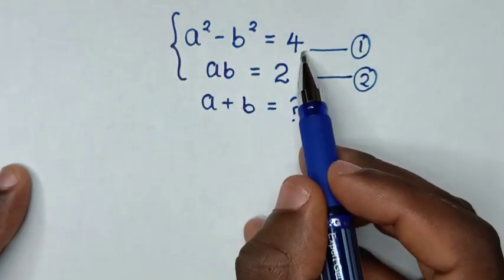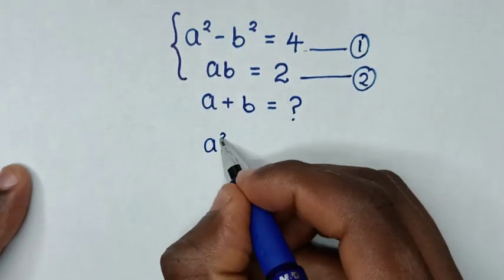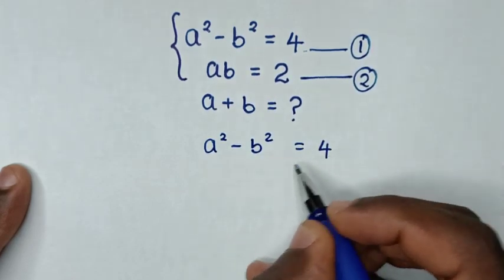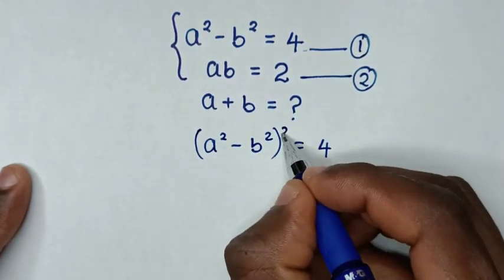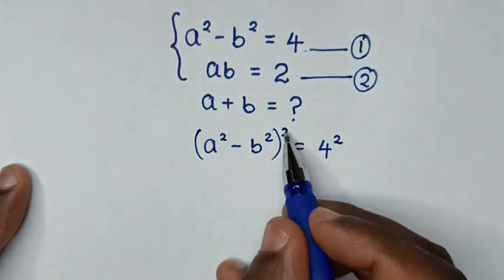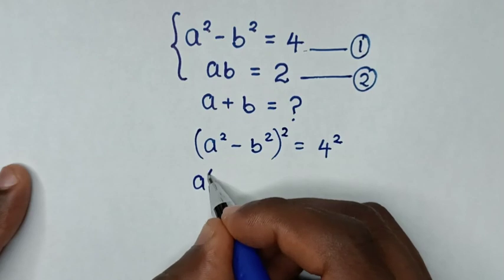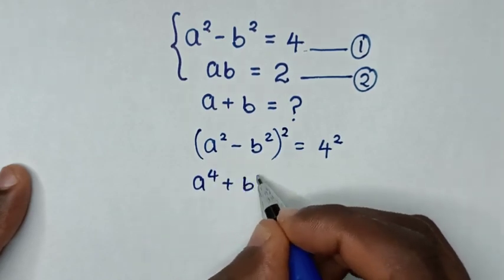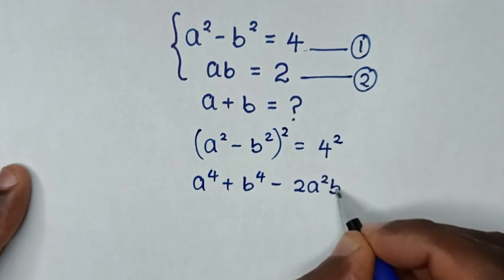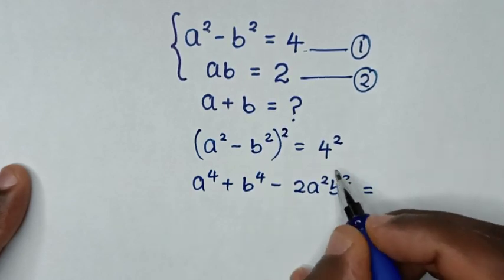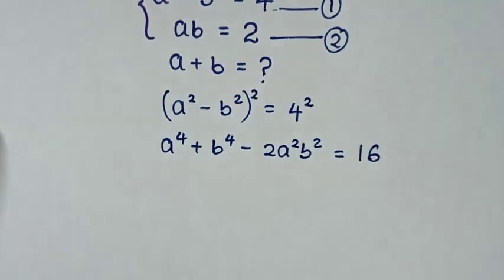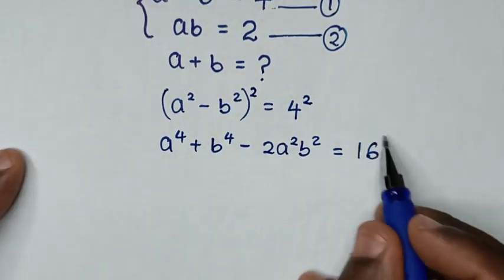Now from equation 1, which is a squared minus b squared is equal to 4, we square both sides. Then a squared minus b squared, bracket squared, is the same as a to the power 4 plus b to the power 4 minus 2a squared b squared, is equal to 4 squared, which is 16. Then in the next step we take the 2a squared b squared to the right side.